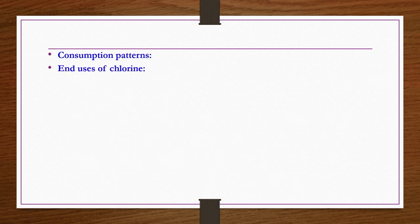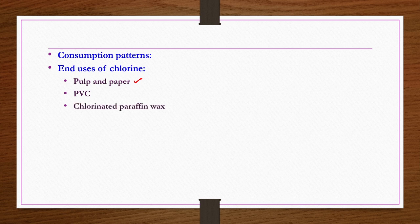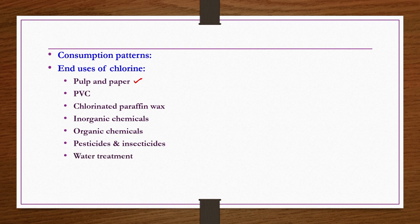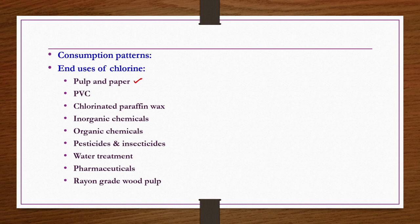Regarding consumption patterns, end uses of chlorine include pulp and paper industries, PVC manufacturing, chlorinated paraffin wax, inorganic and organic chemicals, chlorinated organic chemicals, pesticides, insecticides, water treatment, pharmaceuticals, and rayon grade wood pulp. Some chlorine and NaOH production plants by electrolytic processes are installed near or within industrial complexes such as pulp and paper industries. Rather than procuring from other places, industries prefer to have electrolytic processes within their complex to produce the required Cl2 and NaOH on-site.